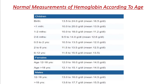For adult females above 18 years, the normal hemoglobin level range is 12.1 to 15.1 gram per dL. The average for adult females is 14 gram per dL.